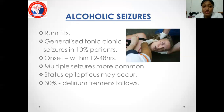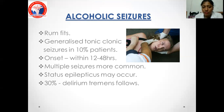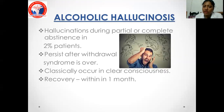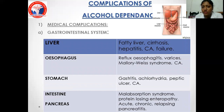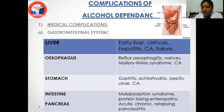Alcohol seizures are generalized tonic-clonic seizures with onset typically within 8 hours. Multiple seizures are more common; status epilepticus may occur. Multiple episodes of GTCs are usually controlled. 30% of delirium tremens follows seizures. Alcoholic hallucinosis can be partial or complete in the absence of clear sensorium in about 2% of patients. Health complications of alcohol dependence include medical complications: fatty liver, cirrhosis, hepatitis, and liver failure are the most common. Also pancreatitis — both acute and relapsing — and malabsorption syndrome.